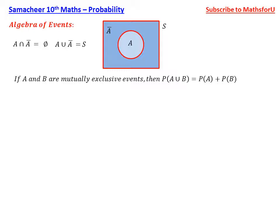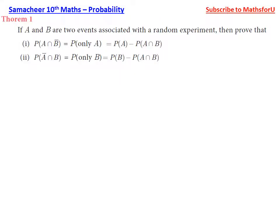If A and B are associated with a random experiment, then prove that P of A intersection B bar is equal to P of only A, that is equal to P of A minus P of A intersection B. And P of A bar intersection B is equal to P of B minus P of A intersection B.